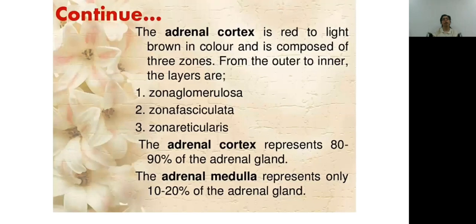The adrenal cortex is reddish-brown in color, and we divide it from outside to inside into three layers: zona glomerulosa, zona fasciculata, and zona reticularis. The adrenal cortex is around 80–90% of the adrenal gland, and the adrenal medulla is around 10–20%.